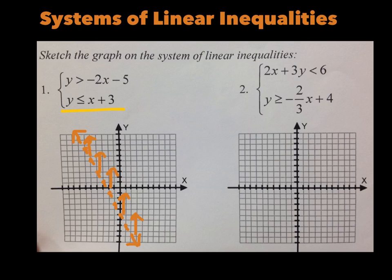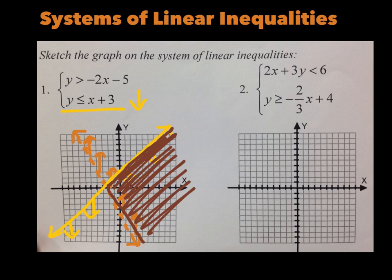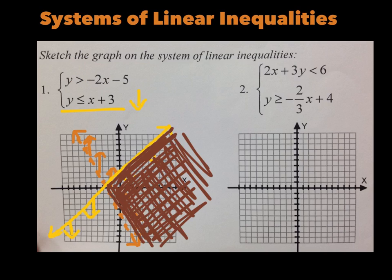Now the second line: y is less than or equal to x plus 3. Less than or equal to tells me we're shading down and it will be a solid line. The y-intercept is 3, the slope is 1. Connect that with a solid line — use a ruler; I can't on my iPad — and we'll shade down. The final shaded area is the overlapping part. Only shade the resulting overlap area. This is called an unbounded area.